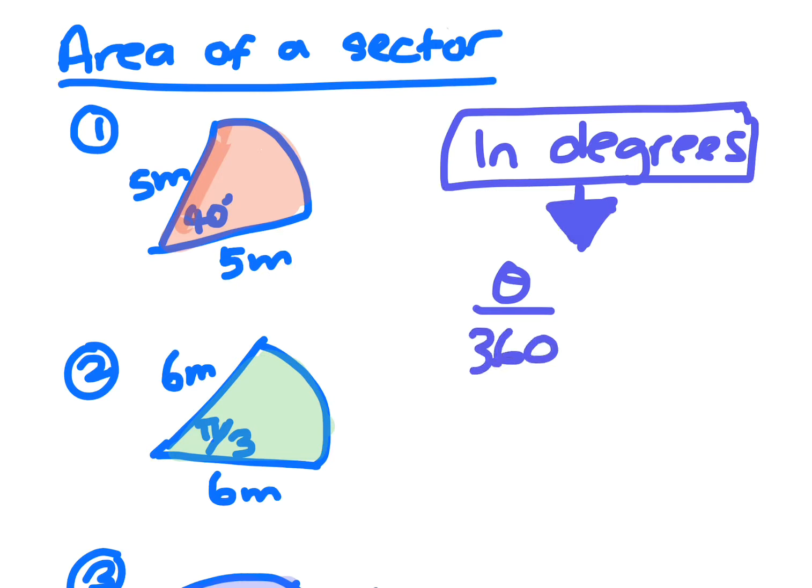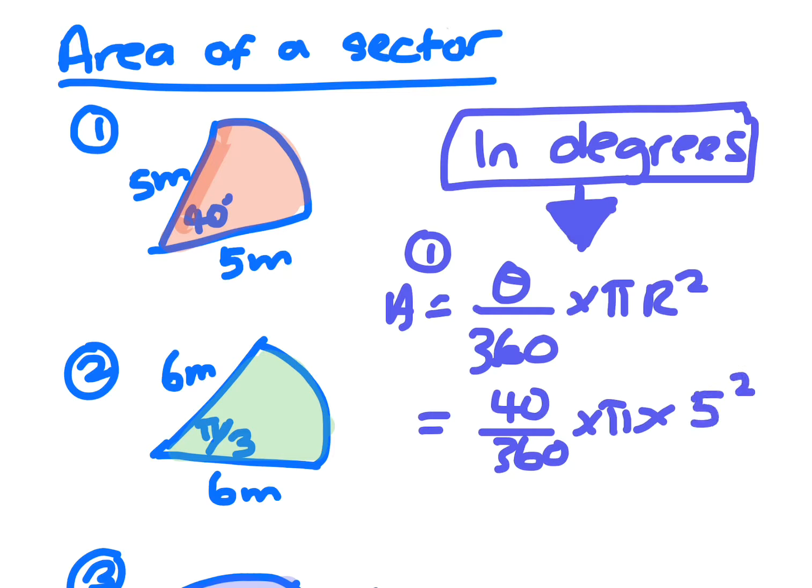So in degrees it's what fraction of the circle that will be the area of the sector, times pi times radius squared. If we're looking at number one, that would be 40 on 360 times pi times the radius, which is five, so it's five squared. Through one decimal point it is 8.7 meters squared.